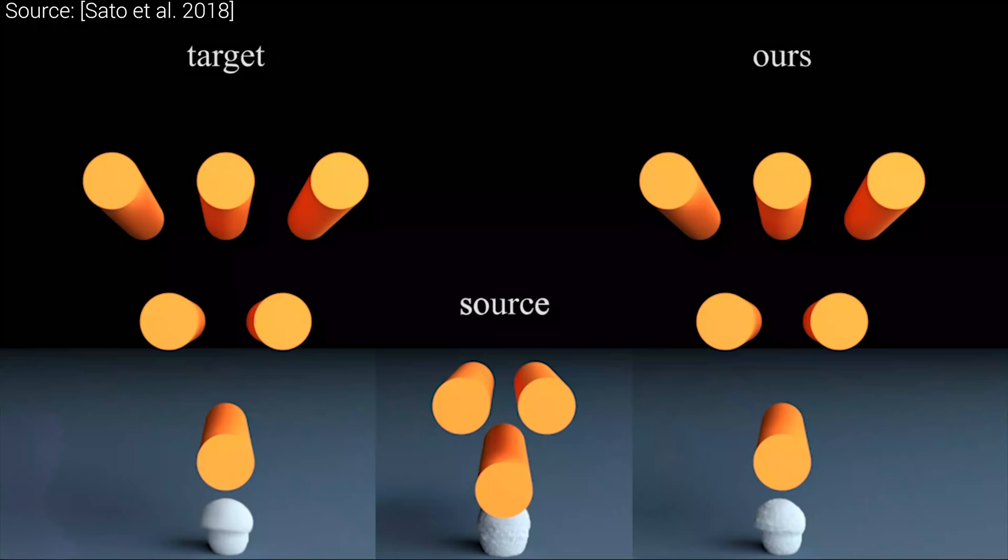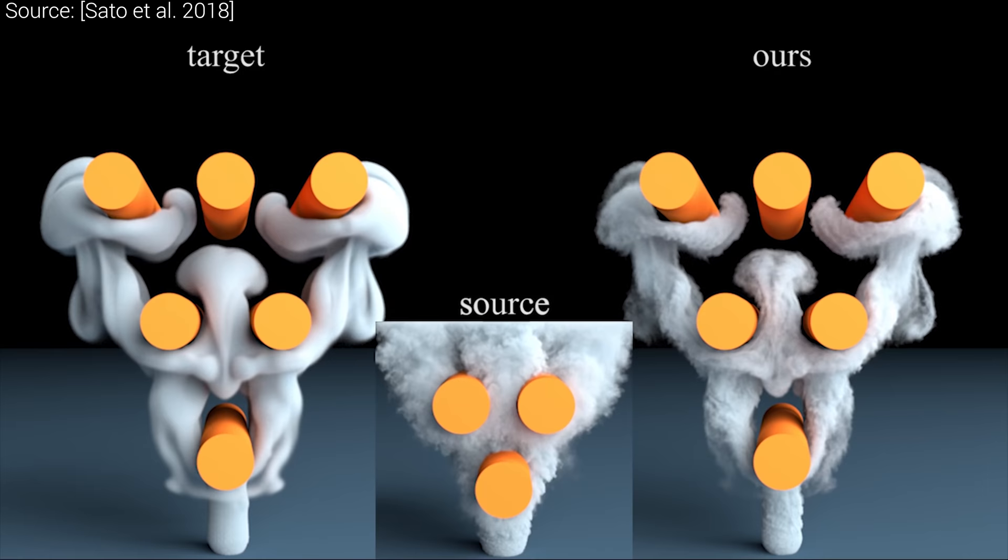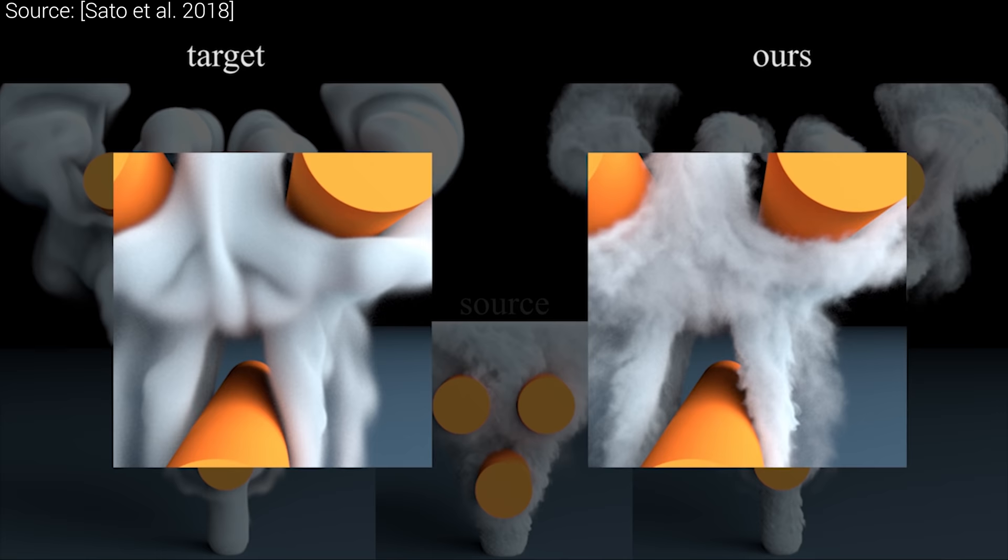It takes the low resolution source and detailed target footage, dices them up into small patches, and borrows from image and texture synthesis techniques to create a higher resolution version of our input simulation.